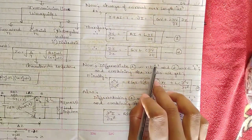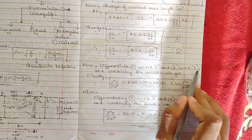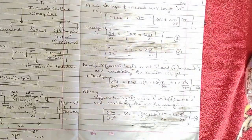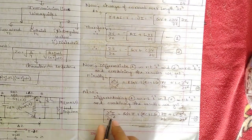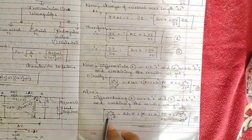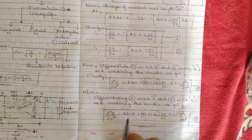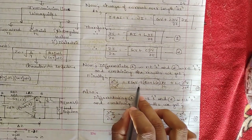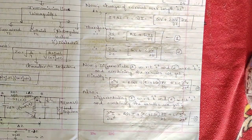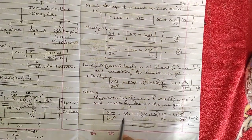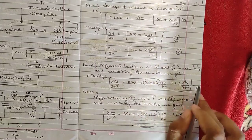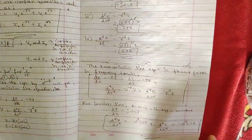By interchanging the differentiation — differentiating Equation 1 with respect to t and Equation 2 with respect to z — we obtain the current form as Equation 4: ∂²i/∂z² = R·G·i + (R·C + L·G)·∂i/∂t + L·C·∂²i/∂t². Wherever the voltage component appeared, it is now replaced by current.